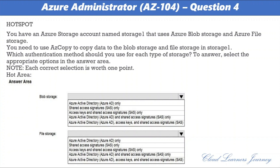You can provide authorization details by using Azure Active Directory or by using a shared access signature (SAS token). For Blob storage, the correct answer is Azure Active Directory and shared access signatures — both Azure Active Directory and SAS token are supported for Blob storage. For file storage, the correct answer is shared access signature only, as only the SAS token is supported for file storage.